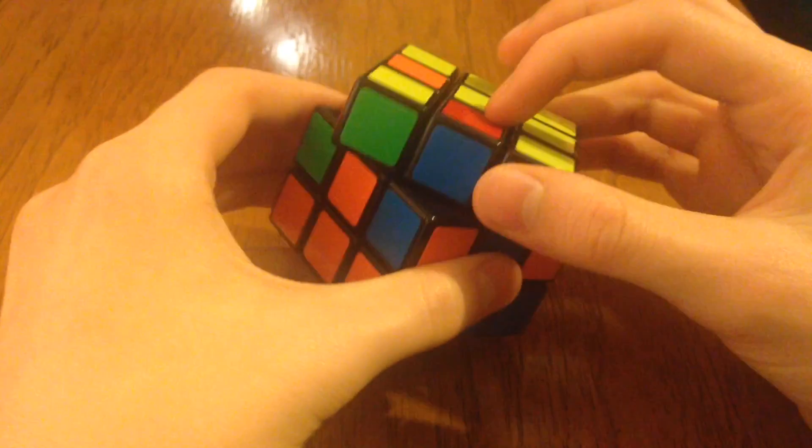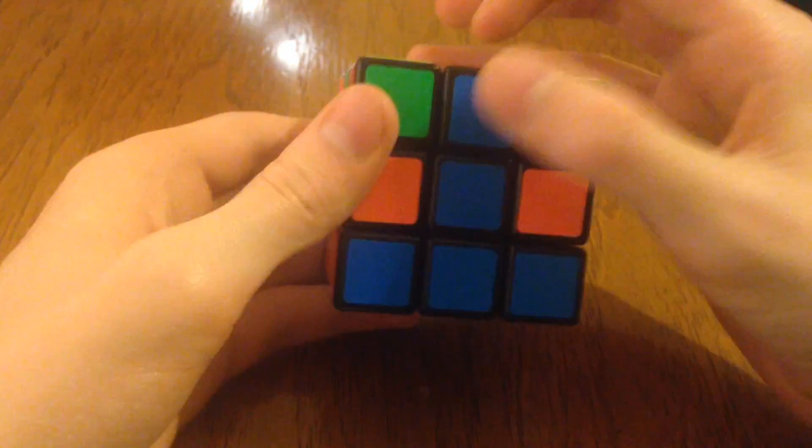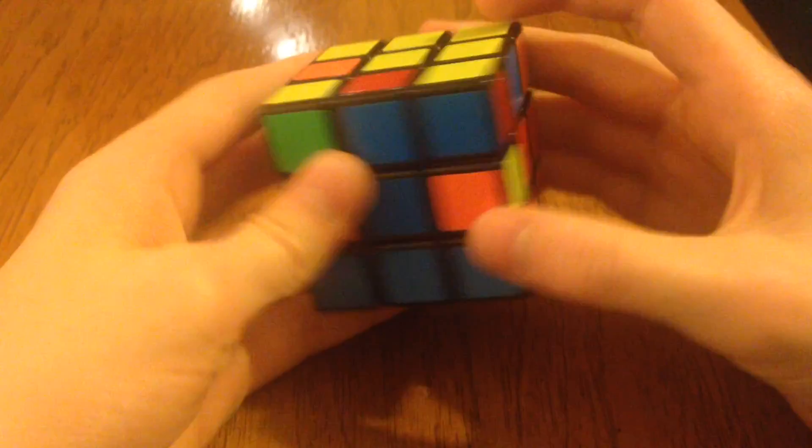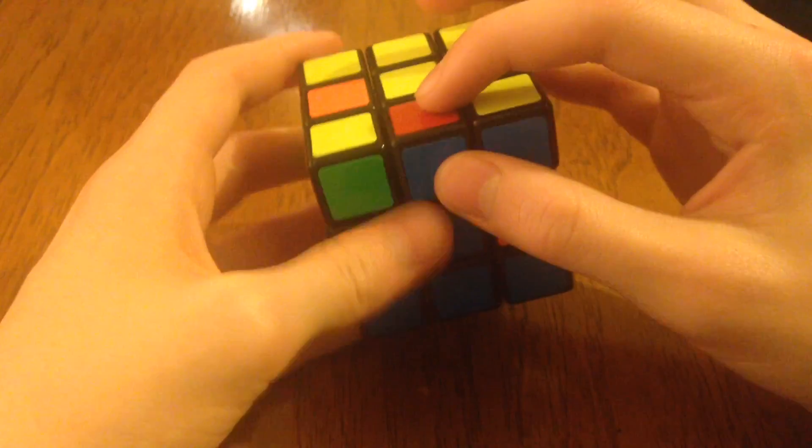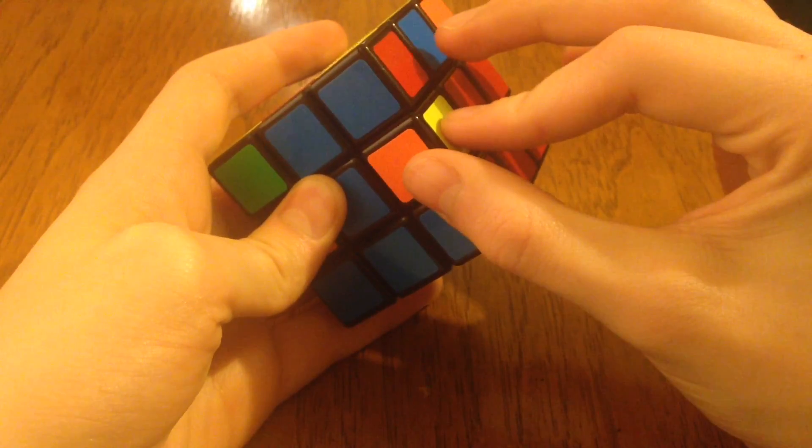So in this case, we have a red and a blue. And we've positioned it to where it matches with the centerpiece. And this time, it's not going to the left because that would be blue and orange. It's going to the right to blue and red.